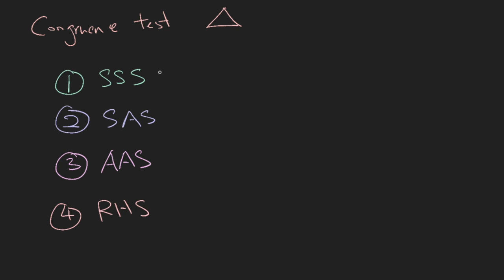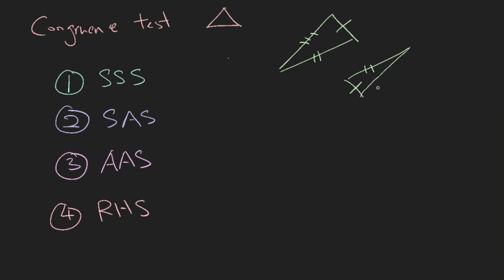The first rule is SSS — the obvious case. If you have two triangles and each of the sides is the exact same length, for example this triangle and this triangle, where this side equals this, this side equals this, and the final side is also the same, then if all three corresponding sides are exactly the same, the two triangles are congruent.